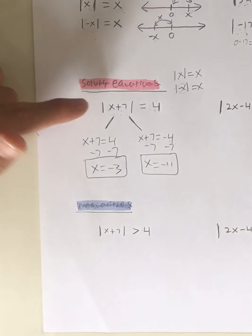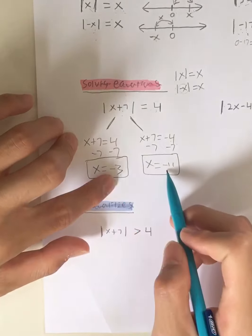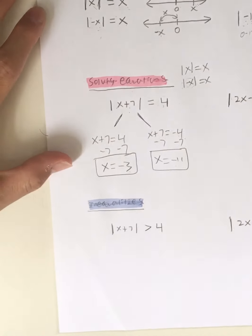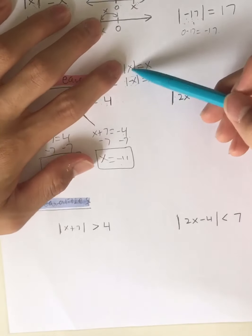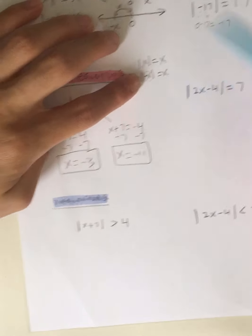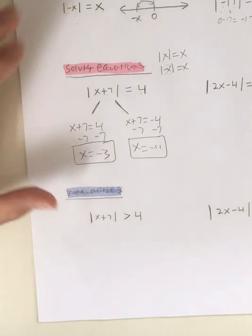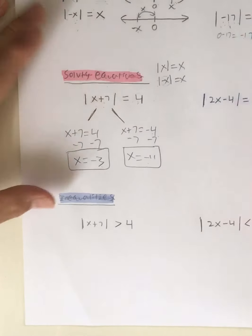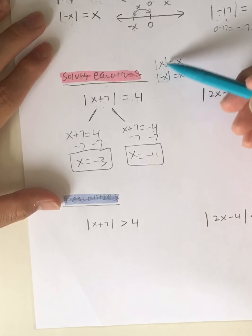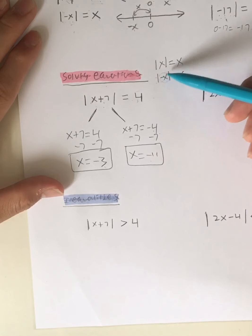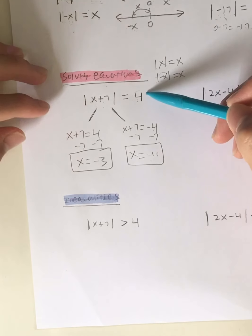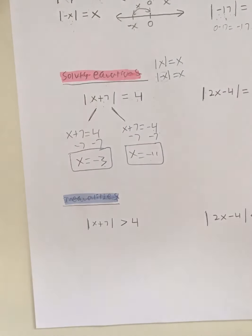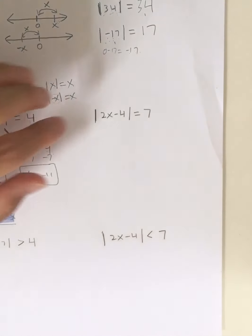Our two solutions for this absolute value equation are negative 3 and negative 11. Whenever you solve an absolute value equation there are always going to be two answers — the positive version and the negative version. In this case we have two negatives, which might be confusing at first. But the absolute value of any number equals x, and the absolute value of the negative version of that number is also x — that's how we got 4 and negative 4.